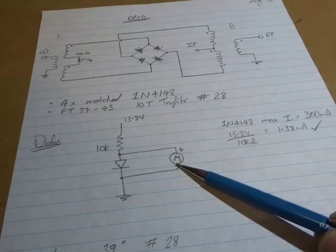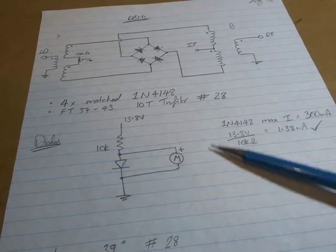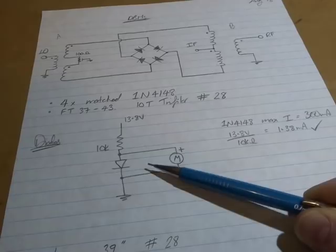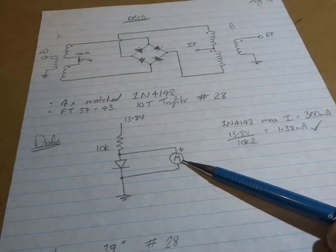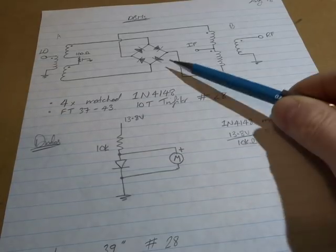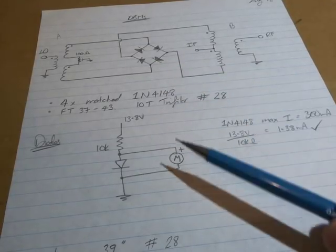So the plan will be to get out a whole stack of 4148s. We'll run them through the jig and then we will pass them out into various piles depending on their forward voltage, and the plan will be to measure that down to the third decimal place. And once we get four matching we can then go ahead and make up the diode ring. So we need eight all up.